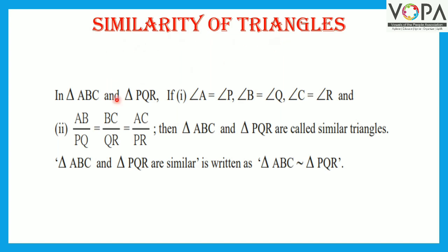Similarity of triangles: In triangle ABC and triangle PQR, if angle A is congruent to angle P, angle B is congruent to angle Q, and angle C is congruent to angle R, and AB upon PQ equals BC upon QR equals AC upon PR, then triangle ABC and triangle PQR are called similar triangles. That means if all the angles of one triangle are equal in measure with all the angles of another triangle, and if the sides of both triangles are in proportion, then the two triangles are called similar triangles.